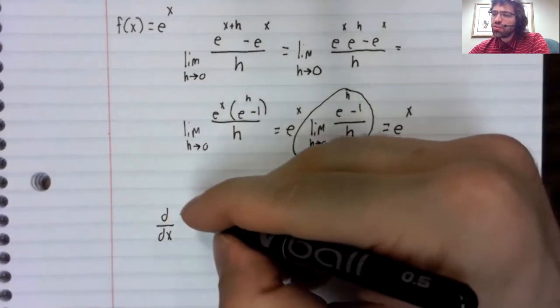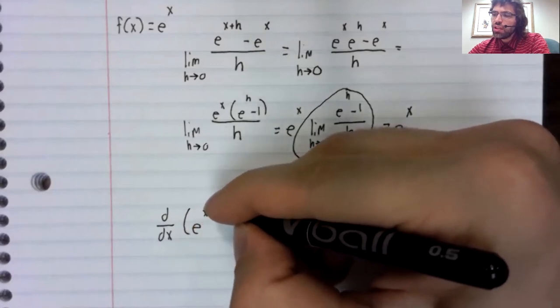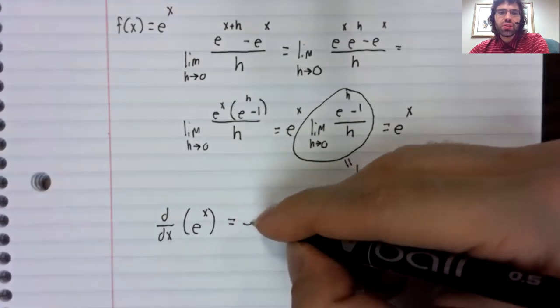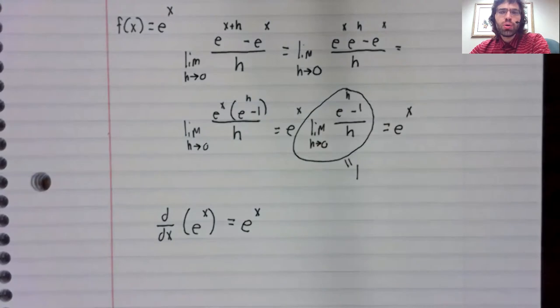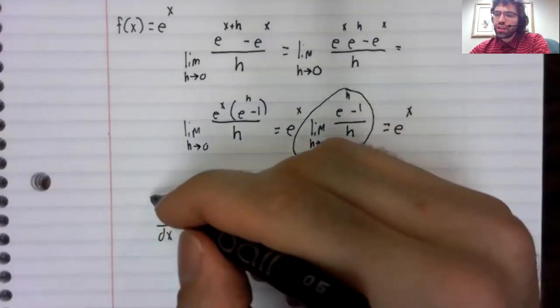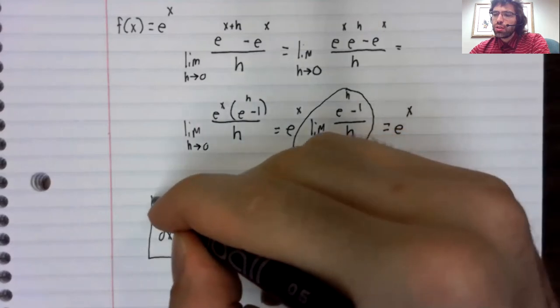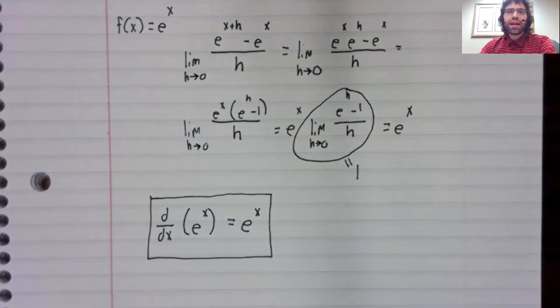I'm saying that e to the power of x is its own derivative. The derivative of e to the x is e to the x.